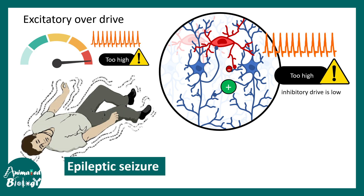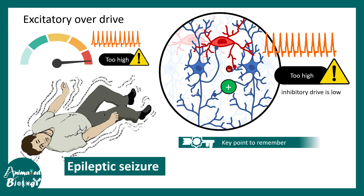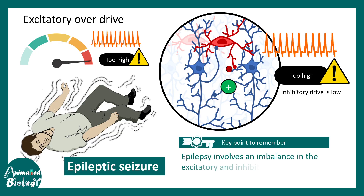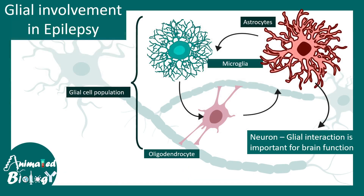When there is excitatory overdrive or reduced inhibitory drive, the ultimate result is uncontrolled, unchecked activity which leads to epileptic seizures. The key point to remember is that epilepsy is due to an imbalance in excitatory-inhibitory neurotransmission in the brain.